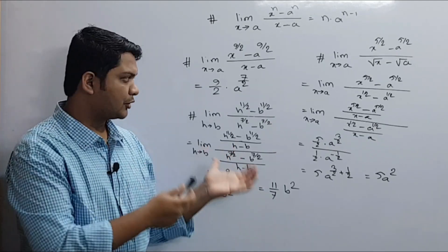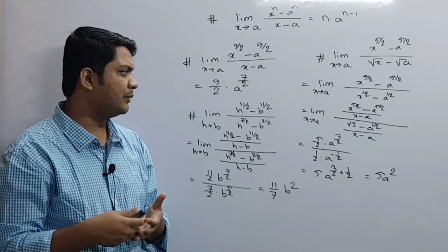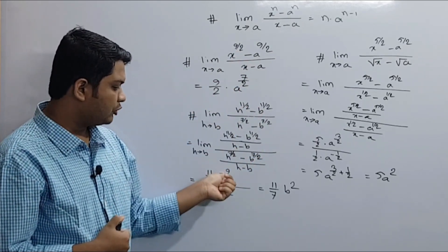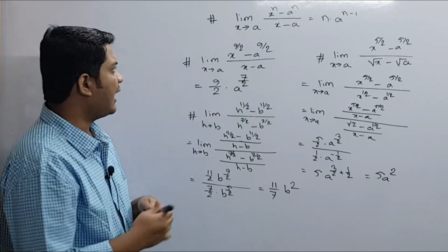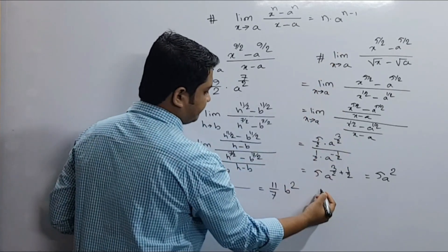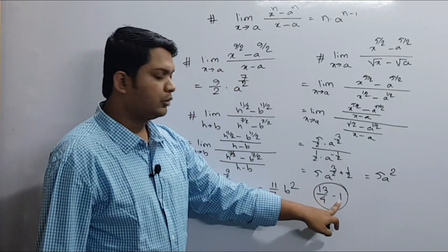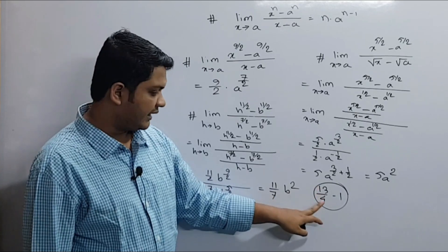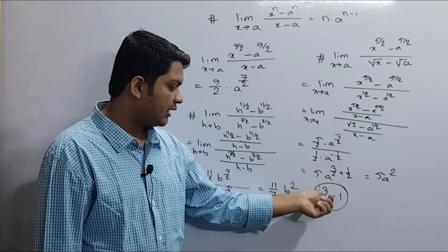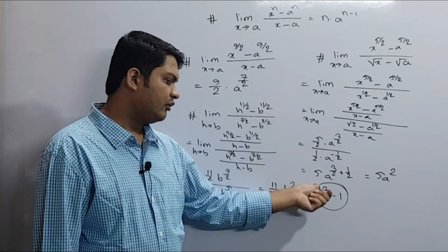So if you have a problem like this, we will solve it. If you have a fraction, for example 9 by 2 minus 1 is 7 by 2, and 11 by 2 minus 1 is equal to 9 by 2. Suppose you have a fraction like 13 by 4 minus 1, where the fraction equals A — that is 9 by 4. So if A equals 9, you get a fraction of A equal to 9 by 4.